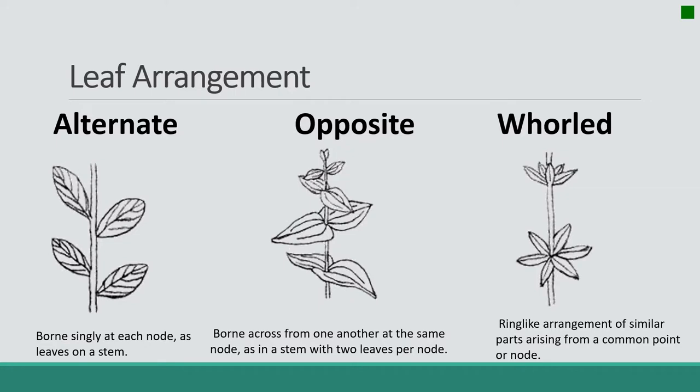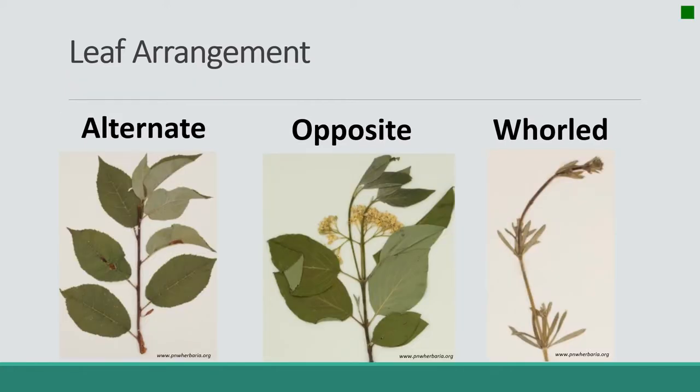Alternate leaf arrangement is where we have a single leaf born at each node. As we move up the main stem, we'll come to a node, and then off to the right there will be a single leaf, and then we'll move up to a second node and there will be a single leaf off to the left, continuing in this fashion all the way to the end of the stem.